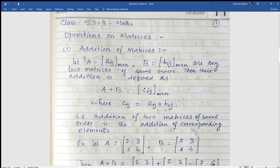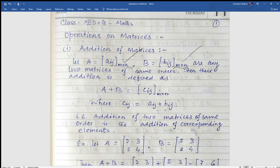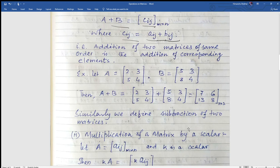First operation is addition of two matrices. Addition is defined as addition of corresponding elements. Let A be a matrix Aij of order m by n, and B equal to Bij of order m by n — these are two matrices of the same order. The order of two matrices must be same, otherwise we cannot define addition. Their addition is defined as A plus B equal to Cij, where Cij equal to Aij plus Bij. Addition of two matrices of same order is the addition of corresponding elements.